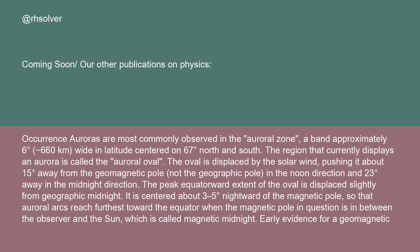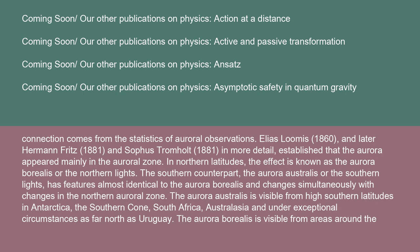Early evidence for a geomagnetic connection comes from the statistics of auroral observations. Elias Loomis (1860) and later Hermann Fritz (1881) and Sophus Trumholt (1881) established that the aurora appeared mainly in the auroral zone. The aurora australis is visible from high southern latitudes in Antarctica, the southern cone, South Africa, Australasia, and under exceptional circumstances as far north as Uruguay.